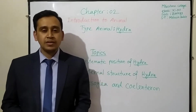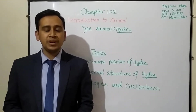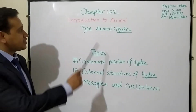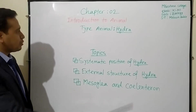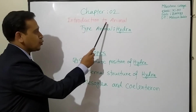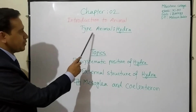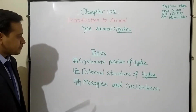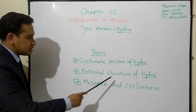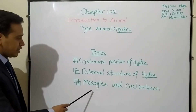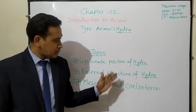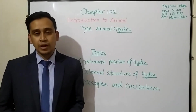My dear students, today I am here again with some new topics. Today's topics are selected from chapter 2. The name of the chapter is introduction to animal — type animal Hydra. Our topics are systematic position of Hydra, external structure of Hydra, mesoglia, and silenteron.